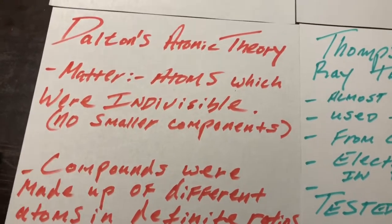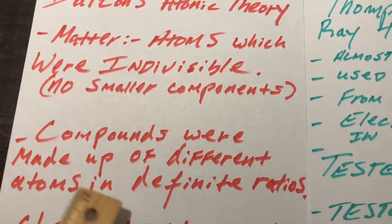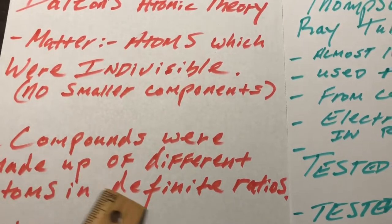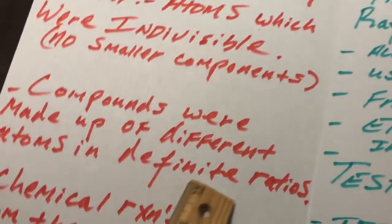NaCl, C6H12O6 for sugar, glucose, and so on. So compounds, he said, when the different atoms combine, they combine in specific or definite ratios.